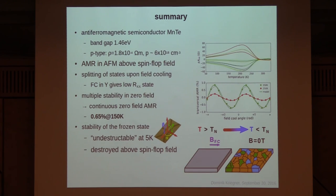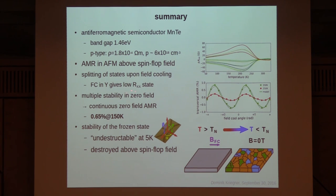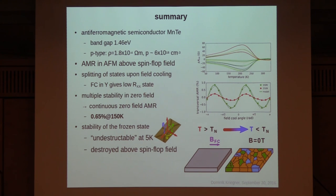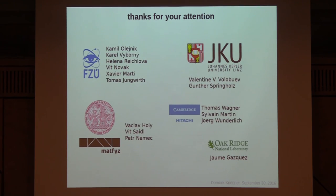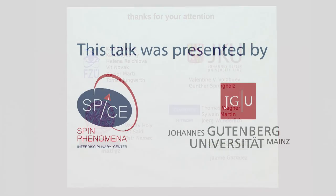In summary: I've shown AMR in antiferromagnets in complete analogy to ferromagnets, detectable by rotating an applied field larger than the spin-flop field to reach the saturation regime. By field cooling we can access distinct resistive states and write multiple such states by choosing the field direction — states that remain stable as long as the applied field does not overcome the spin-flop field in the antiferromagnetic phase. Thank you for your attention and to all my co-workers for contributing to this work.